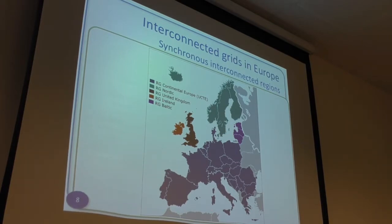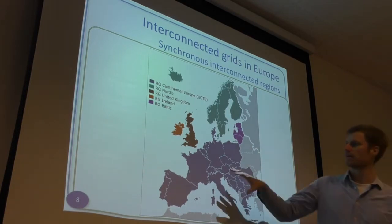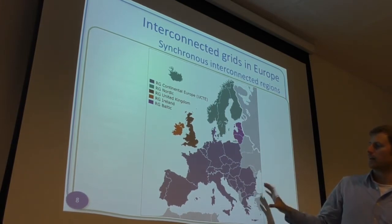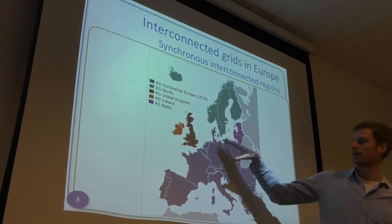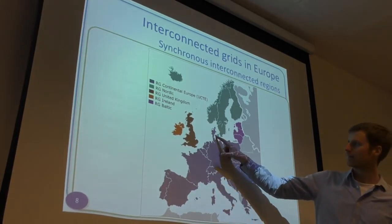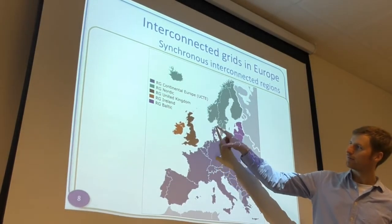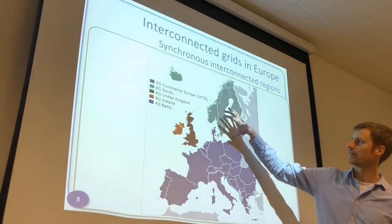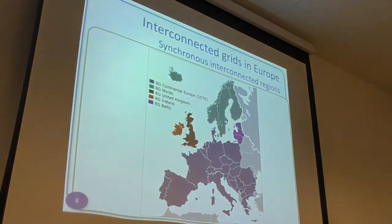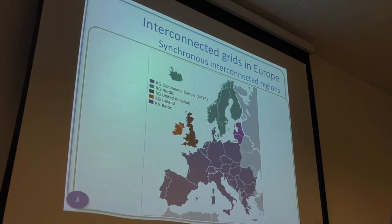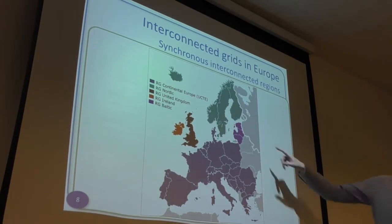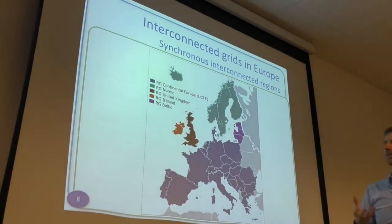In Europe, power grids are defined on a continent or interconnected-countries basis, not just a country basis. There is a synchronization of frequencies across this whole part of Europe — except Jutland and Funen, because Zealand is actually connected with Norway, Sweden, and Finland, running on an independent frequency. They're not synchronized — it's still 50 Hz but the small offsets are not synchronized. There are also some smaller parts running their own synchronized systems.